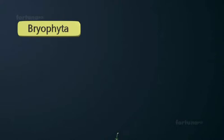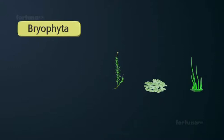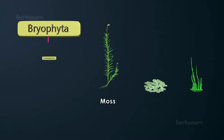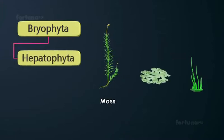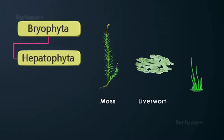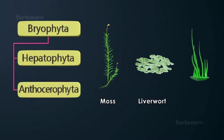Bryophytes are simple plants without the specialized vascular tissue which is used for transporting water and nutrients to various parts of the plant. Bryophyta includes mosses, Hepatophyta includes liverworts, and Anthocerophyta includes hornworts.